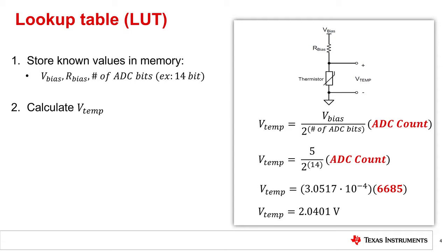To find the voltage per ADC LSB, divide the bias voltage in the circuit by the total number of LSB bits in your ADC, which is 2 to the power of ADC bits. From there, you can multiply this known value by the changing ADC count to find the voltage drop across the thermistor at that point in time.